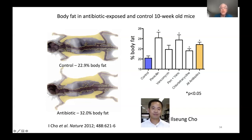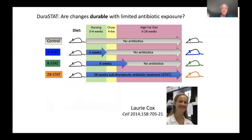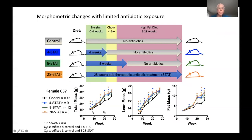The next study was done by Lori Cox when she was a graduate student. Lori asked: are the changes due to antibiotics durable, even if the exposure is limited? In addition to mice that received no antibiotics and those receiving lifetime antibiotics, she had groups that got only eight weeks or only four weeks of antibiotics. Looking at total body mass, lean mass, and fat mass, all three antibiotic exposures increased total mass, lean mass, and fat mass. Four weeks beginning at the start of life was sufficient for the full effect.